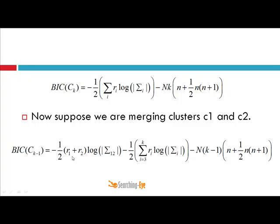We add R1 and R2, and the covariance matrix now represents the covariance of the combined data points R1 plus R2. This is the covariance matrix for the merged cluster C12. This gives us the BIC score at level K minus 1, and now I subtract this score from the previous score.